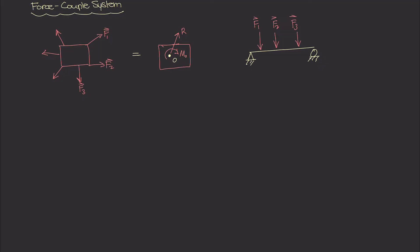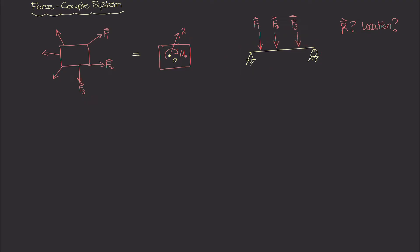If the question asks what is the resultant of these forces and where is it located, we can use what we know about force couple systems to solve that problem. The question really is: what is the resultant vector, and where is its location on this beam? This is not a question of whether or not this beam is in static equilibrium — there's a pin and a roller so there will be reactions, but this question is just asking what is the resultant of this set of forces and where is it located.